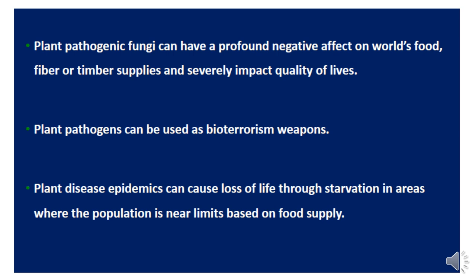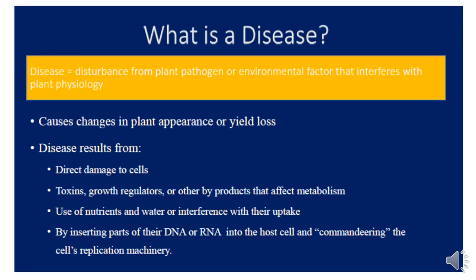So what is the meaning of disease? Disease is a disturbance of the plant from a plant pathogen or environmental conditions that interfere with plant physiology or plant functions. Subsequently, the plant will appear or show different symptoms than the normal appearance of a healthy plant, and the yield will be reduced.